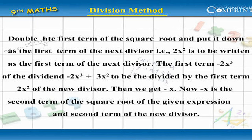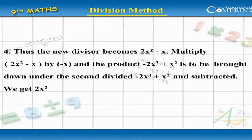The first term minus 2x cubed of the dividend, minus 2x cubed plus 3x squared, is to be divided by the first term 2x squared. Then, dividing minus 2x cubed by 2x squared, we get minus x. Minus x is the second term of the square root of the given expression and the second term of the new divisor. Thus, the new divisor becomes 2x squared minus x.